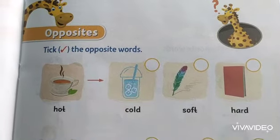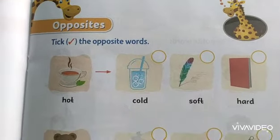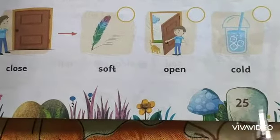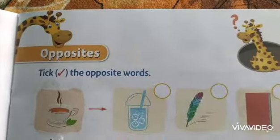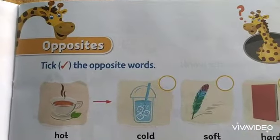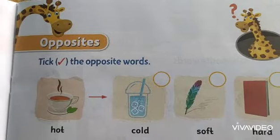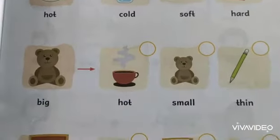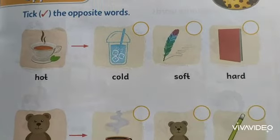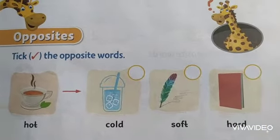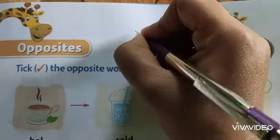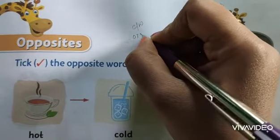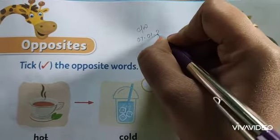Today we will do our class work in our literacy workbook. So all of you please open page number 25. That chapter is opposites. From your literacy skill book you already know about the opposite words. So here are the practice set. We will revise it again. Write class work, CW, and put today's date: 07-01-2021.